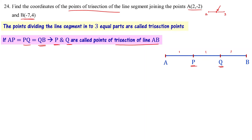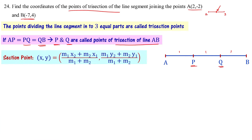So these are trisection points, which are section points. We know the section formula from coordinate geometry: the section point is defined as (x, y), where x = (m1·x2 + m2·x1) / (m1 + m2) and y = (m1·y2 + m2·y1) / (m1 + m2).